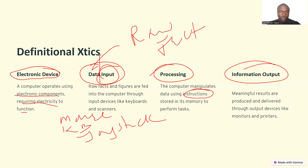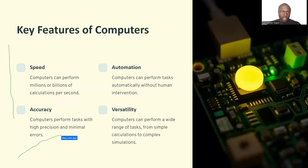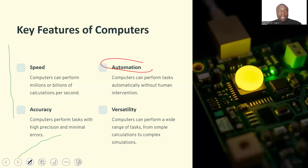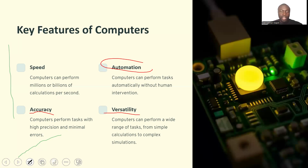The first feature is speed — computers can perform millions or billions of calculations per second. The second is automation — computers can perform tasks automatically without human intervention. The third is accuracy — computers can perform tasks with high precision and minimal error. The fourth is versatility — computers can perform a wide range of tasks, from simple calculations to complex ones.